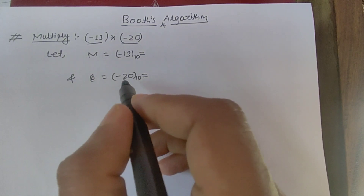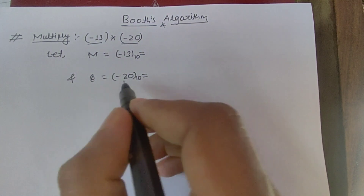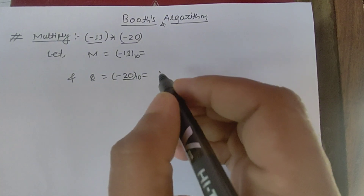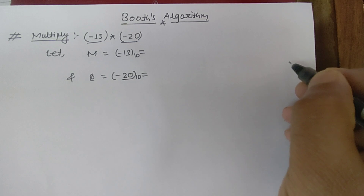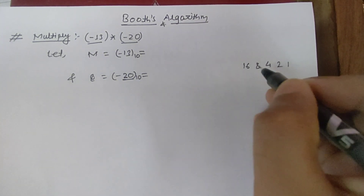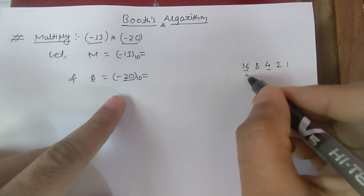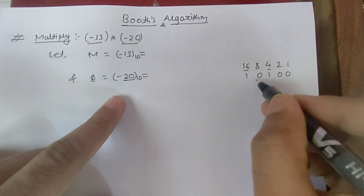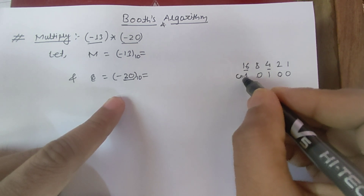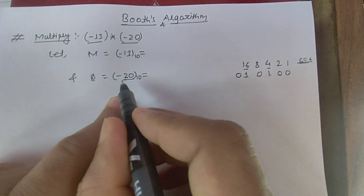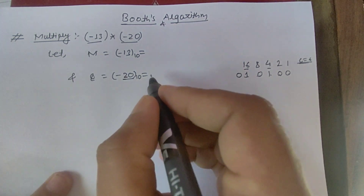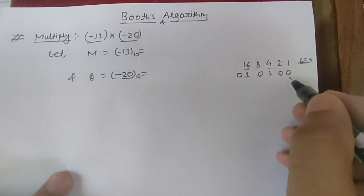I am going to convert Q = 20 to binary first, because 20 is the larger number and determines the bit count. Using powers of 2: 1, 2, 4, 8, 16 — 20 equals 16 plus 4, so binary 20 is 010100. Since we need one extra bit added in front, the total count is 6 bits.